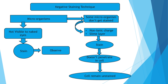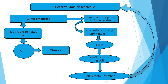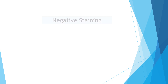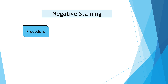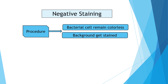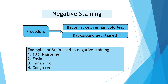In such cases we have to find another way of staining the microorganisms. A different and unique staining technique is used, and that staining technique is called negative staining technique. Negative staining technique is the only staining procedure in which the bacterial cell remains colorless and the background gets stained.